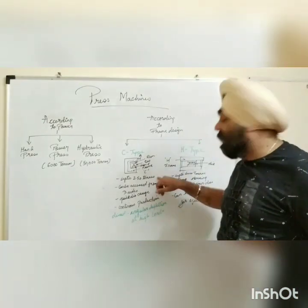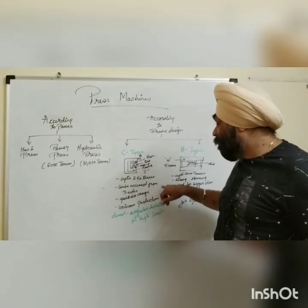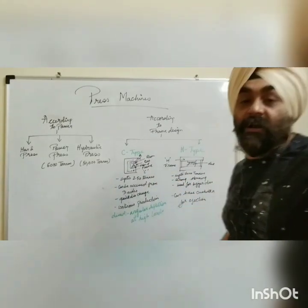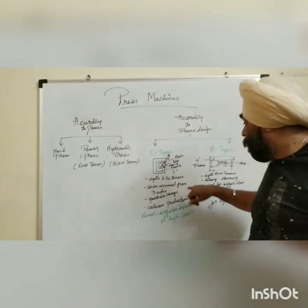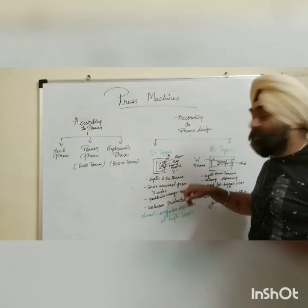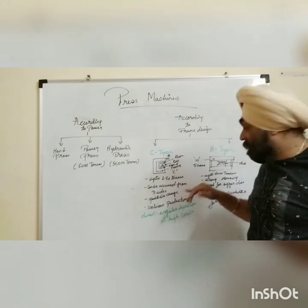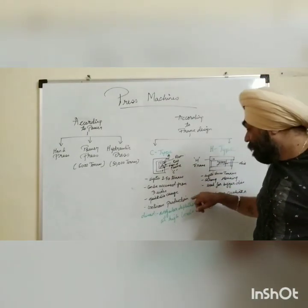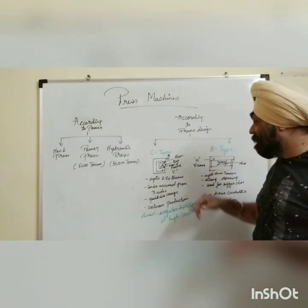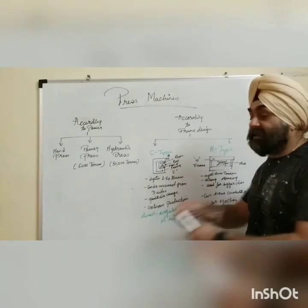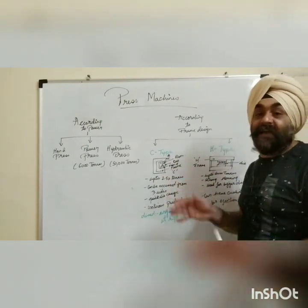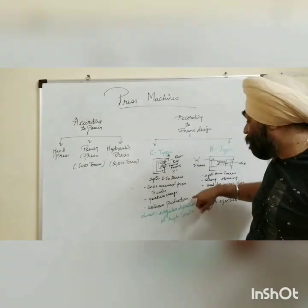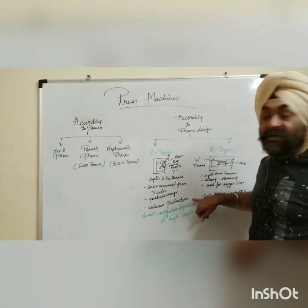Small parts which do not require high tonnage can be made easily in small companies because the C-type press can be accessed from all three sides, so it's very easy and production is very fast. You can have quick die changes because the access is very fast and the press machine construction is small, then you can have continuous production.